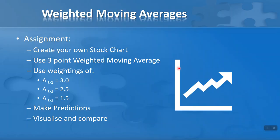For your assignment, I'm going to get you to create your own stock chart. I used Yahoo Finance, but you can download data from wherever you get your financial data — up to five years or as little as three or six months. Use a three-point weighted moving average with weightings of 3.0, 2.5, and 1.5, giving the highest weighting to the most recent time period. Use this to make predictions and visualize overall trends, comparing forecast versus actual demand.